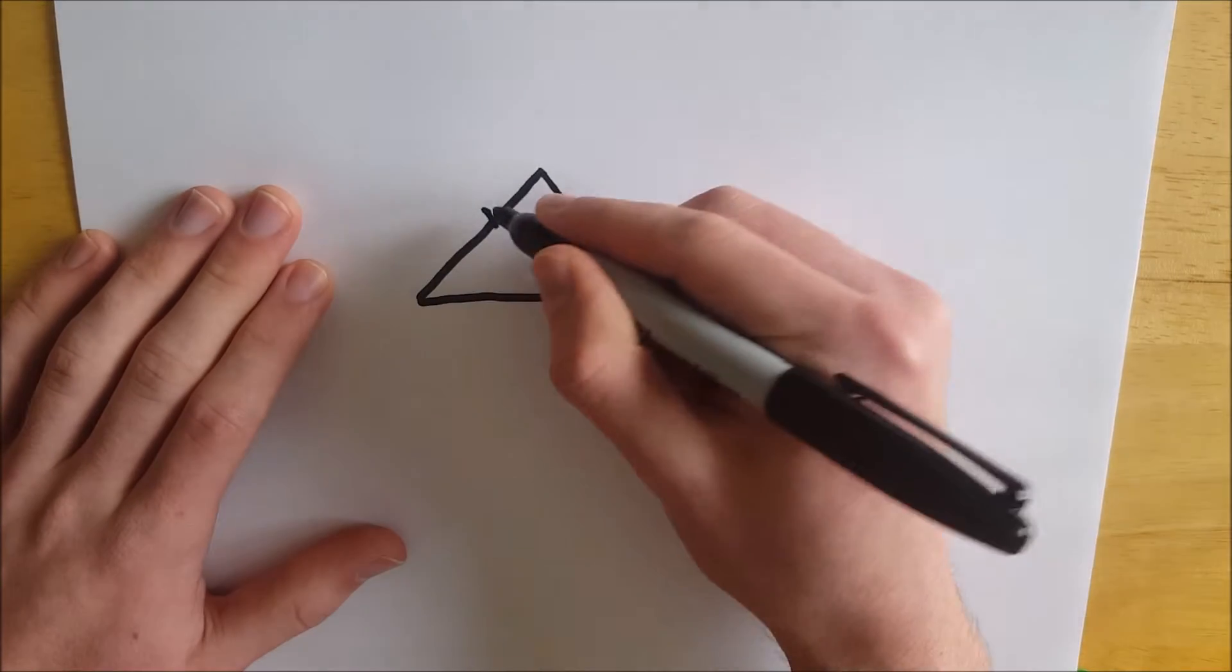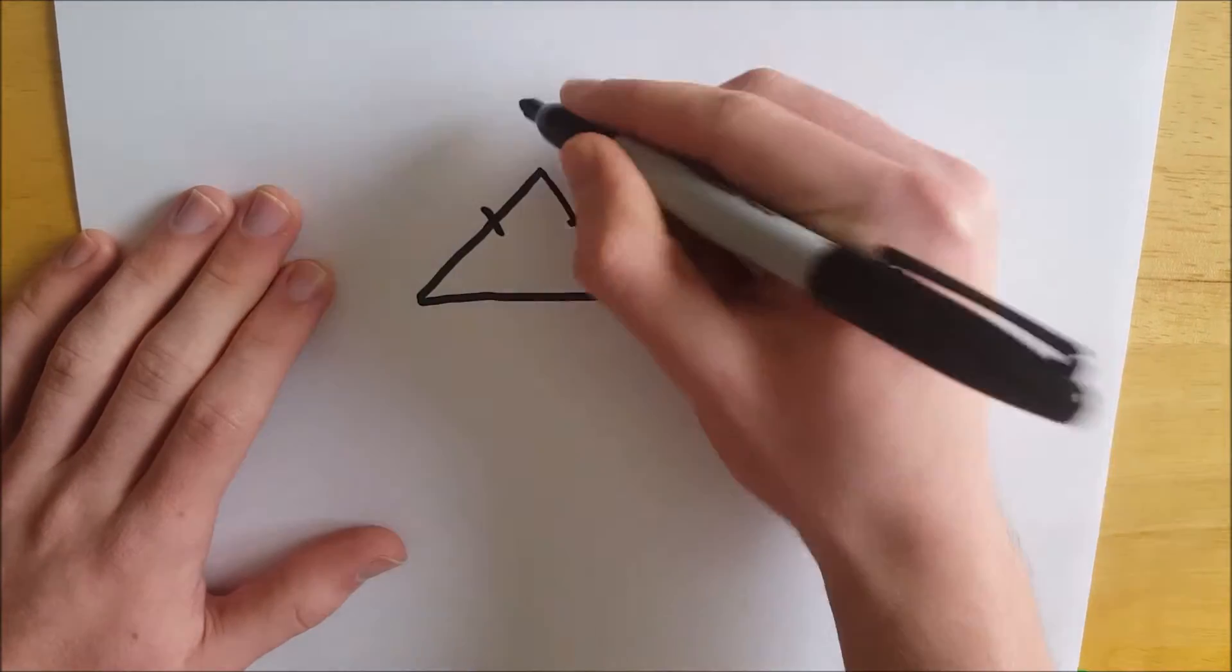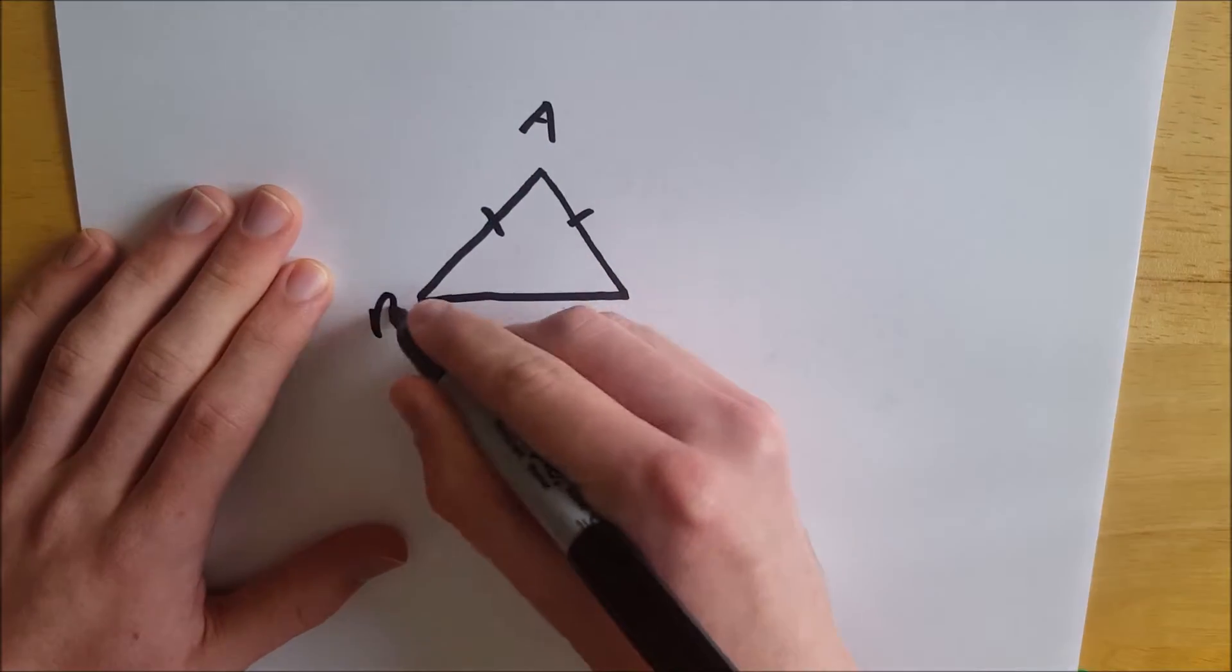So it's an isosceles triangle so we're going to have this side congruent to this side. I might as well label this A, B, and C.